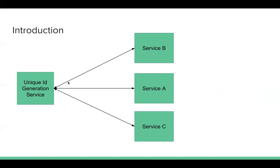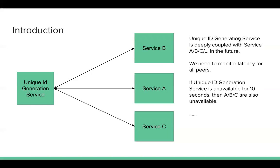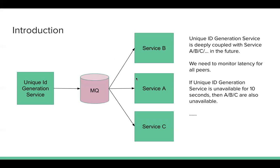Whenever a new team tries to use this service, we need to set up meetings, figure out the QPS, and how many new instances are needed. We also need to set up metrics to monitor the P99 latency and availability. So we can say the unique ID generation service is deeply coupled with services A, B, and C. If the unique ID generation service is unavailable, then A, B, and C are also unavailable.